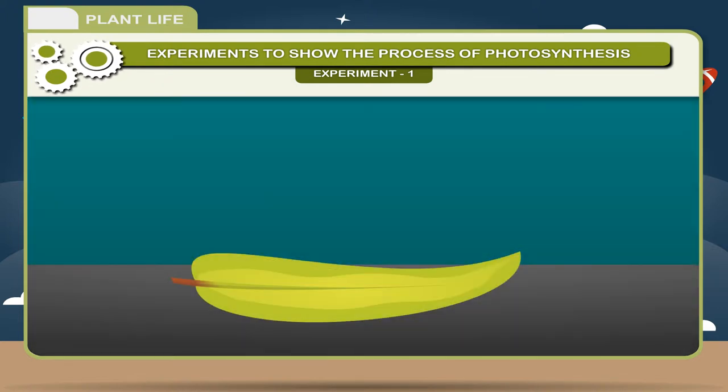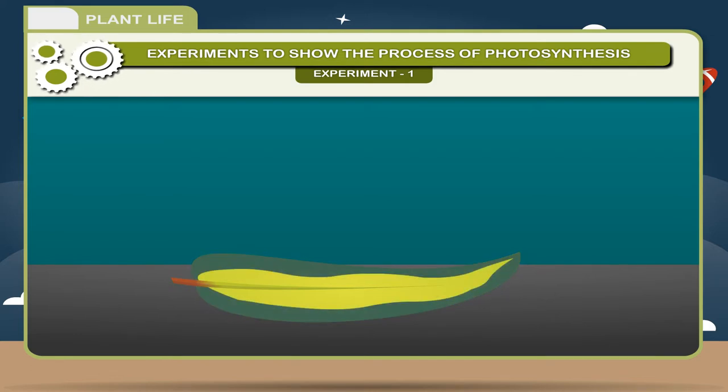Test the leaf for starch. Only the green parts of the leaf turn bluish, showing the presence of starch.